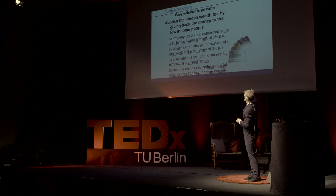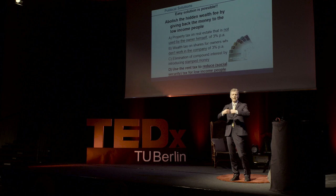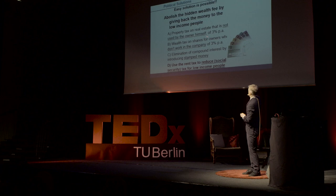What we could do, for example, is introduce a property tax on real estate not used by the owner himself — either he lives in his home, or the farmer who cultivates his soil — for let's say 3% per year. We could also try a wealth tax on shares and dividend incomes for those who don't work in the company, maybe also 3%, but that's dangerous — capital might flee to other places. And third, we should eliminate compound interest by introducing stamped money. Right now we have interest rates of nearly 0% in Europe and the United States, so we could do this somewhat later.